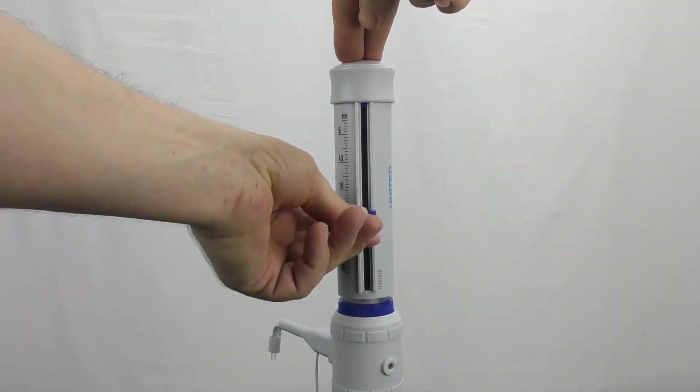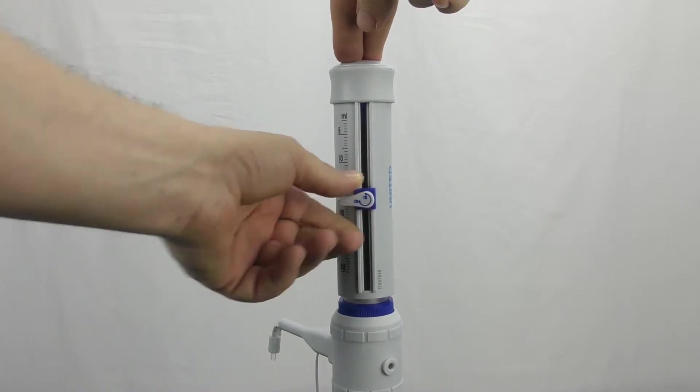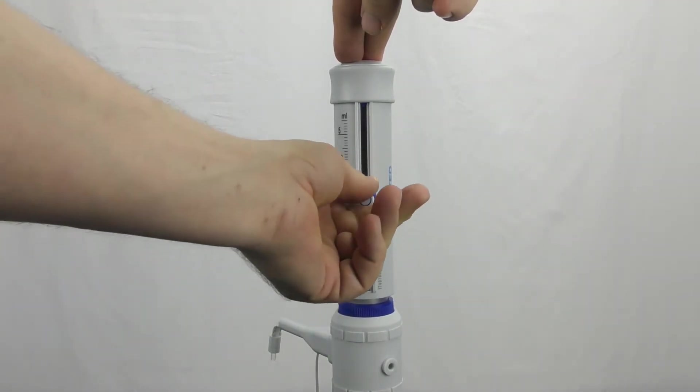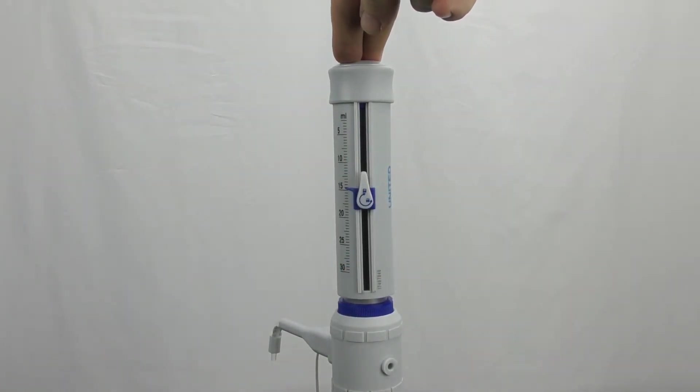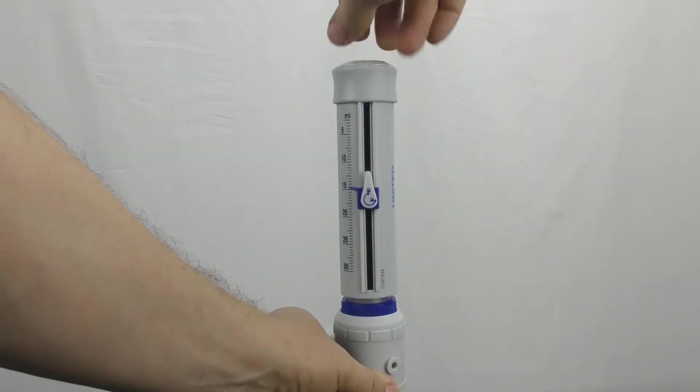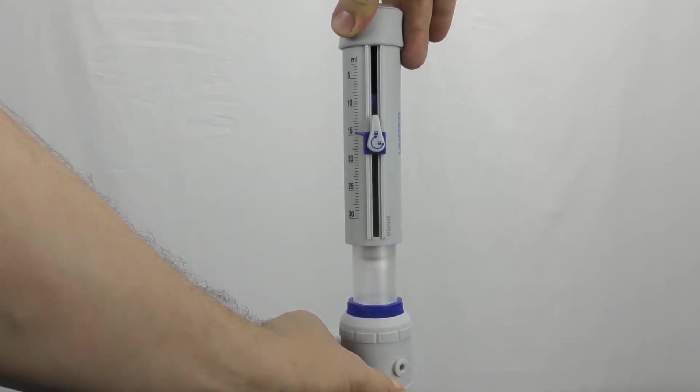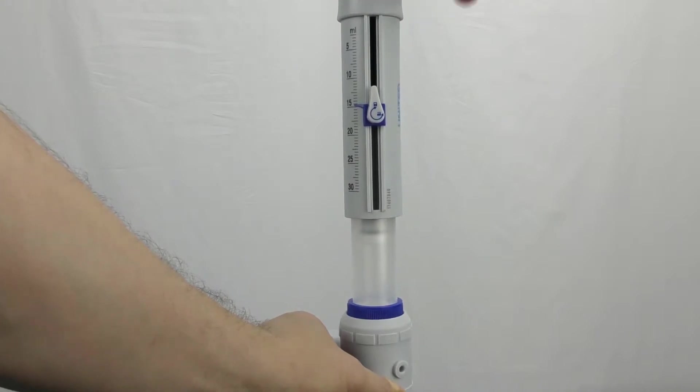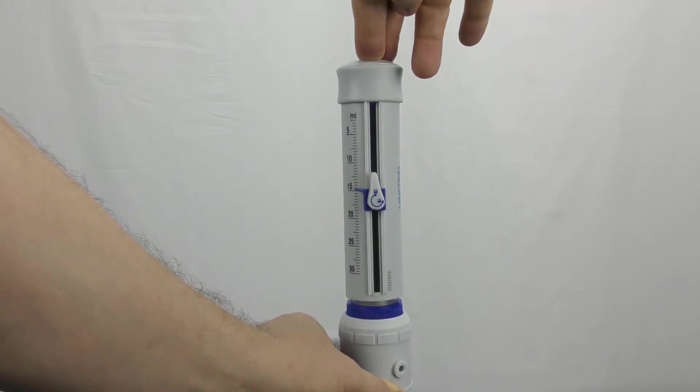You would turn this so that you can adjust the height or the volume that you want to dispense. Lock it in place. Then as you lift up, it will draw up the solution to that specific volume, and then when you press down it dispenses it.